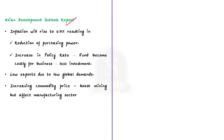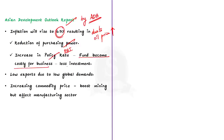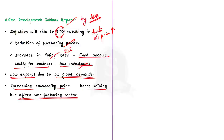The Asian Development Outlook is an annual report by the Asian Development Bank. The report stated that inflation for India will be around 6.7% due to increasing oil prices. The consequences of this inflation include reduced consumer purchasing power. RBI has increased its policy rates, making borrowing costly for businesses, and as a result investments will come down. The report also stated that due to low global demand, exports from India will come down. Additionally, the increasing price of commodities will give a boost to the mining sector, but the higher cost of raw materials will affect the manufacturing sector.